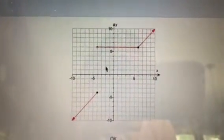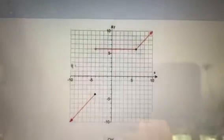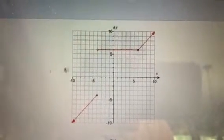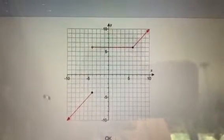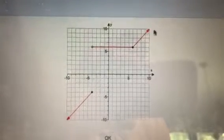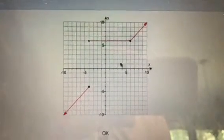So first of all, on the domain, remember domain is how far your graph goes from the left to the right. It's looking at your x's. I can see that there's an arrow here, and it's just going to continue to go over this way, and there's an arrow here, and there's no break.